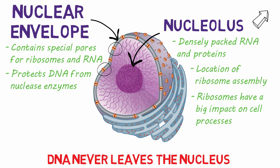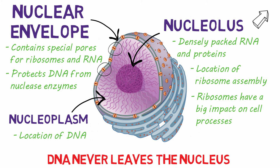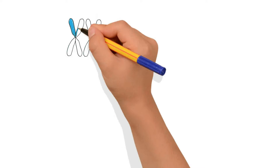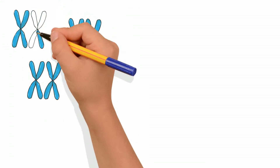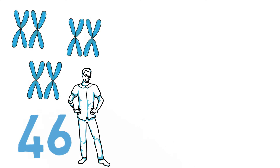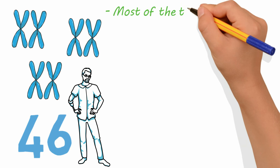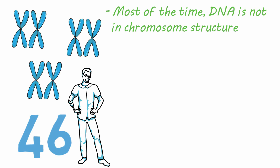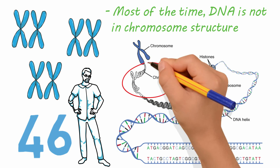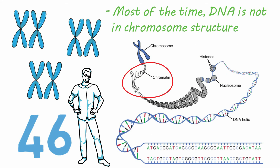The nucleolus sits in a nucleoplasm, which encompasses the remaining contents of the nucleus. This is where the DNA is located. When the cell is getting ready to divide, the DNA forms chromosomes. These are structures you may be familiar with — humans have 46 chromosomes in each cell. However, most of the time the DNA is not in this chromosome structure, but is called chromatin, with the DNA being less compact and wrapped around special histone proteins.